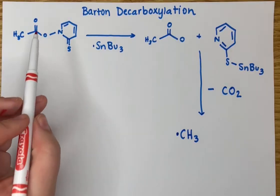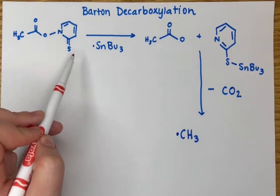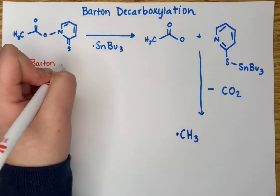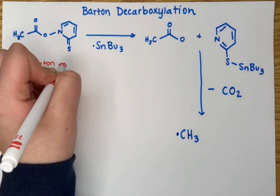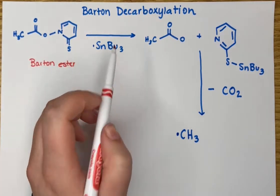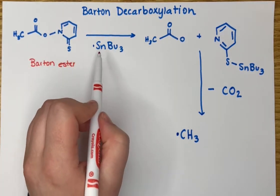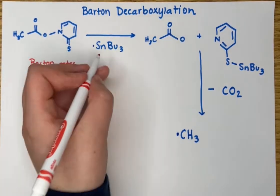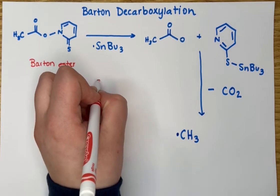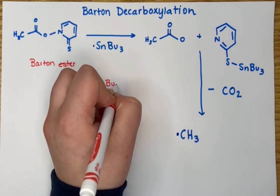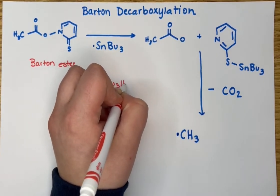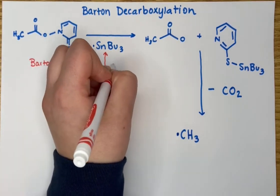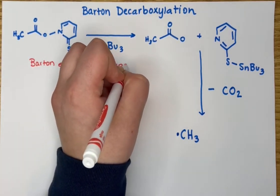This right here is our Barton ester, and it reacts with the tributyltin hydride — so this is our tributyltin radical — and it came from the hydride, which comes from a radical initiator, AIBN, to make that.